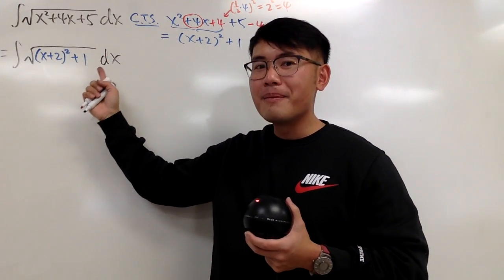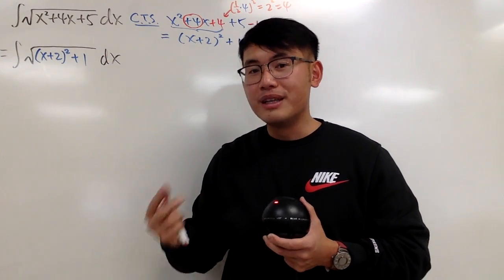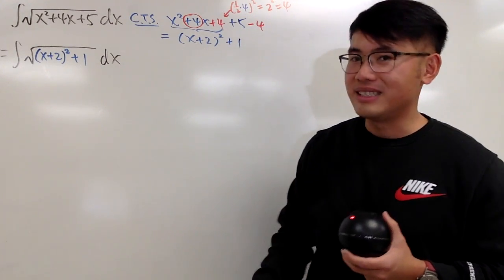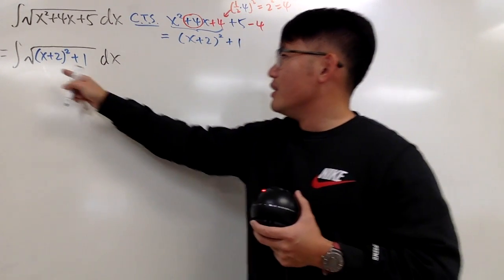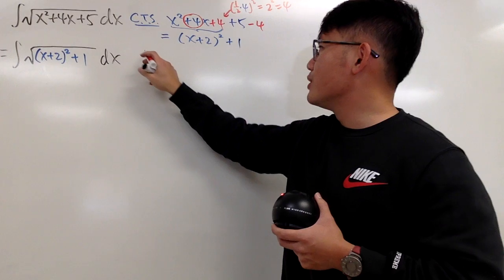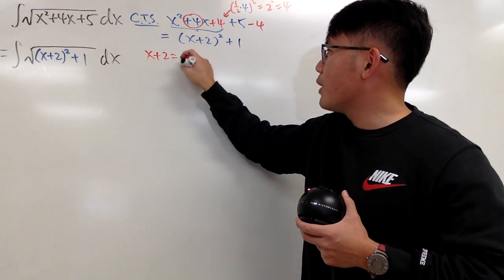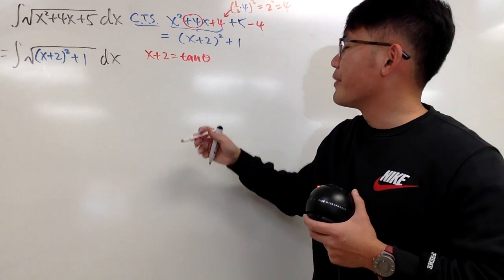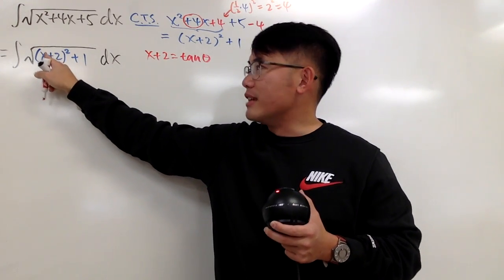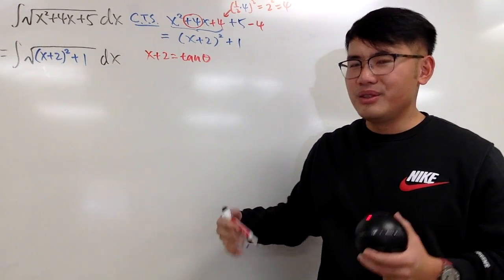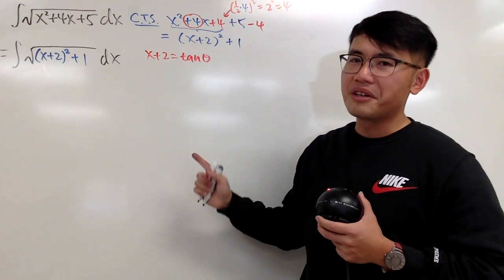Tangent square theta plus 1 will give you secant square theta. That's exactly what we need. And let's just put that down right here. Let's just take the input here, which is x plus 2 to be our tangent theta. And some people might want you to write this as u and all that. You can do it, but I think this is pretty clear.